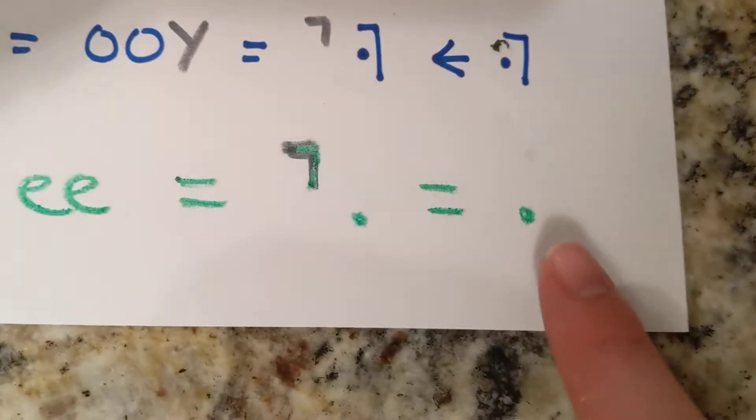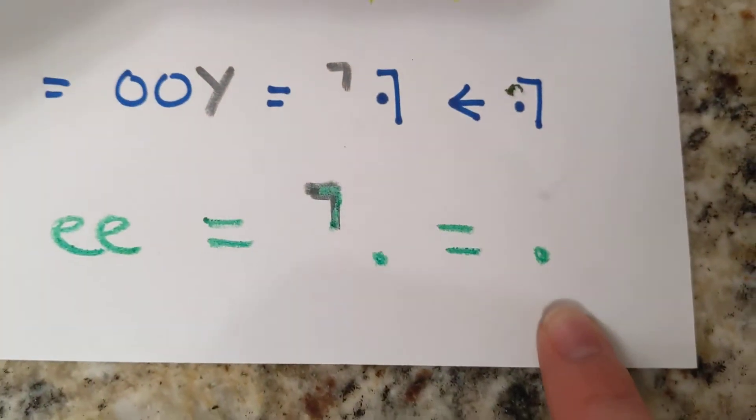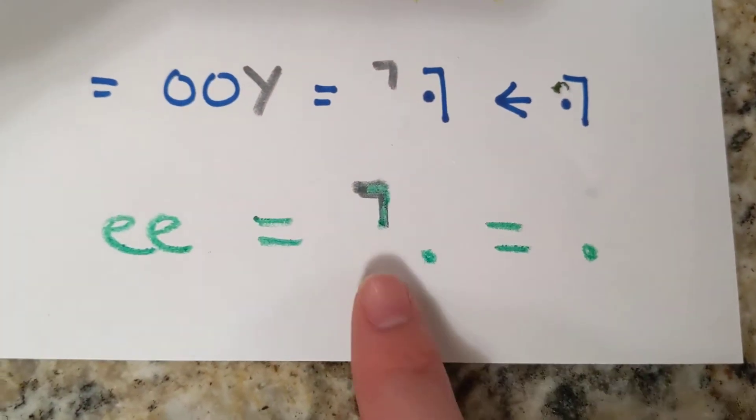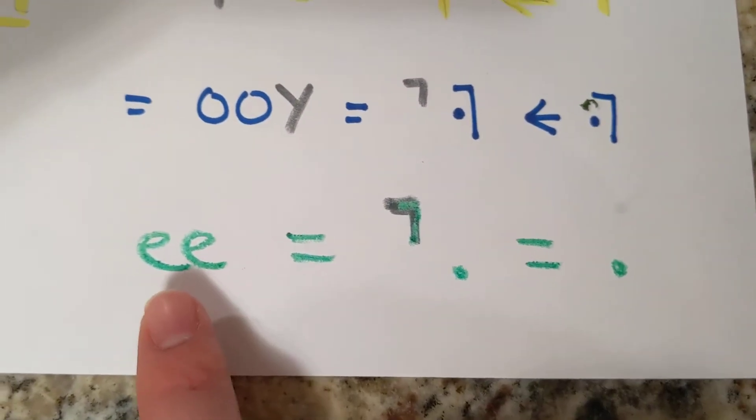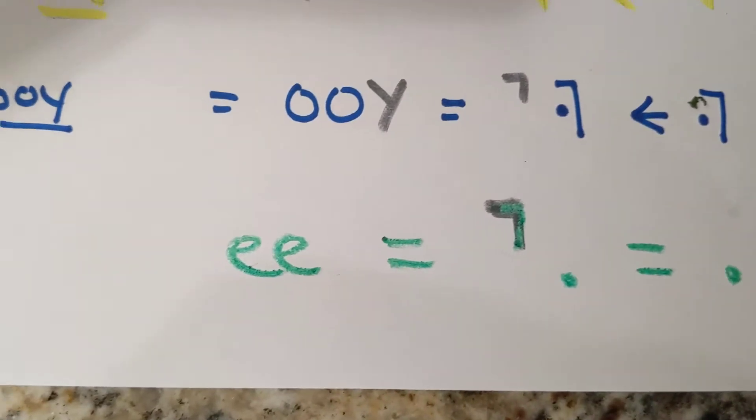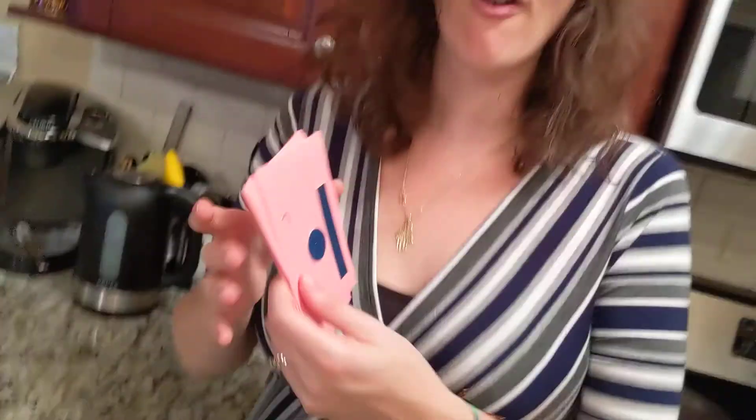However, when you add a yud to the e, it still makes an e sound. So come along with me and let's practice our flashcards. Look at it and remember, it's putting two sounds together to make a combination.